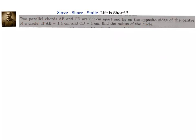We have two parallel chords AB and CD which are 3.9 centimeters apart and lie on the opposite sides of the center of a circle. First, let me draw this diagram. We will put down AB = 1.4 and CD = 4, then we will see how we can leverage the theorems related to chords to find the radius of the circle.